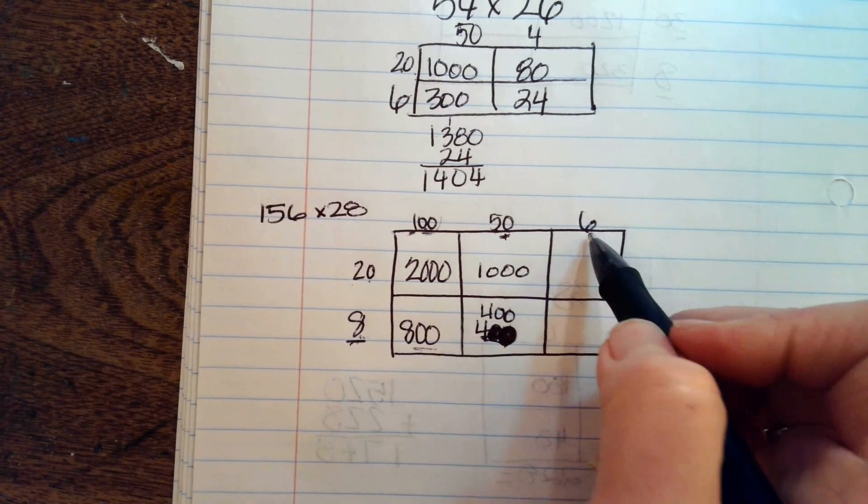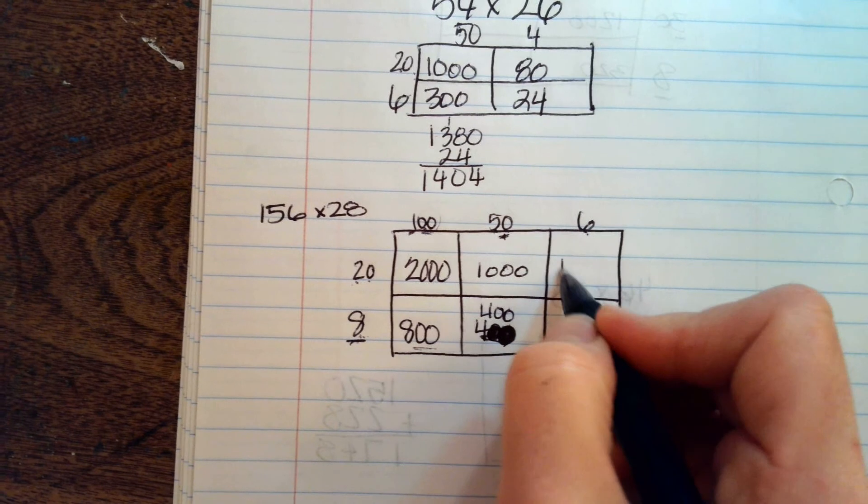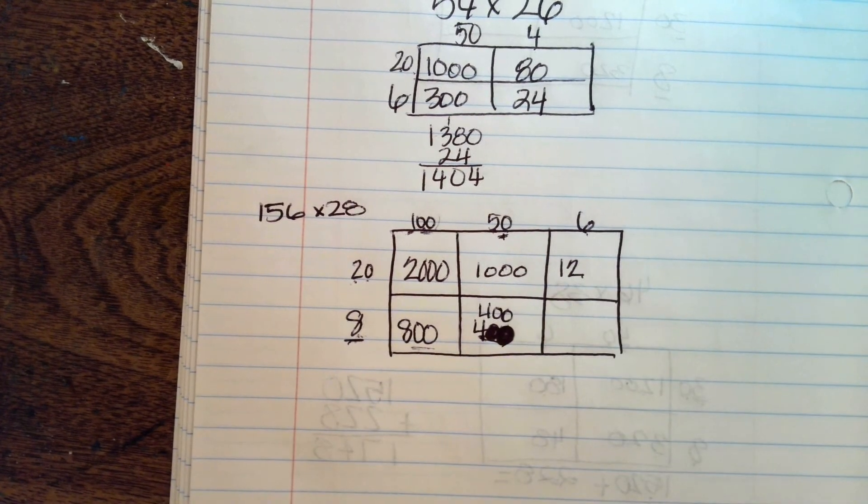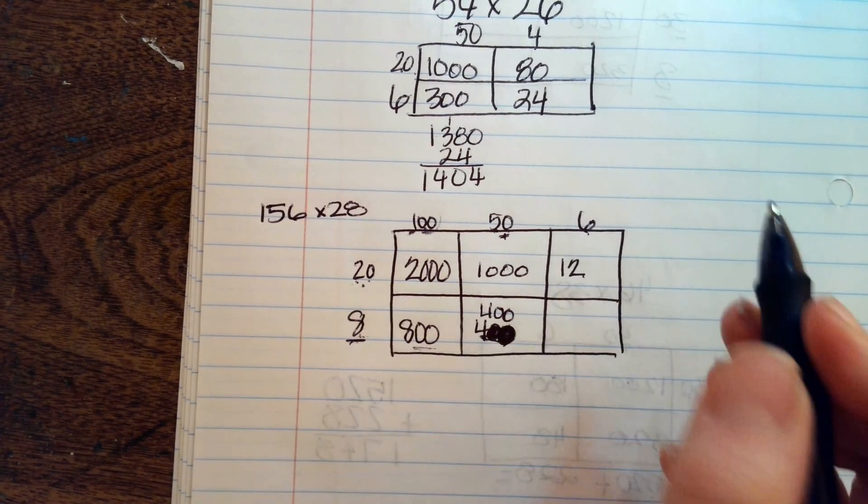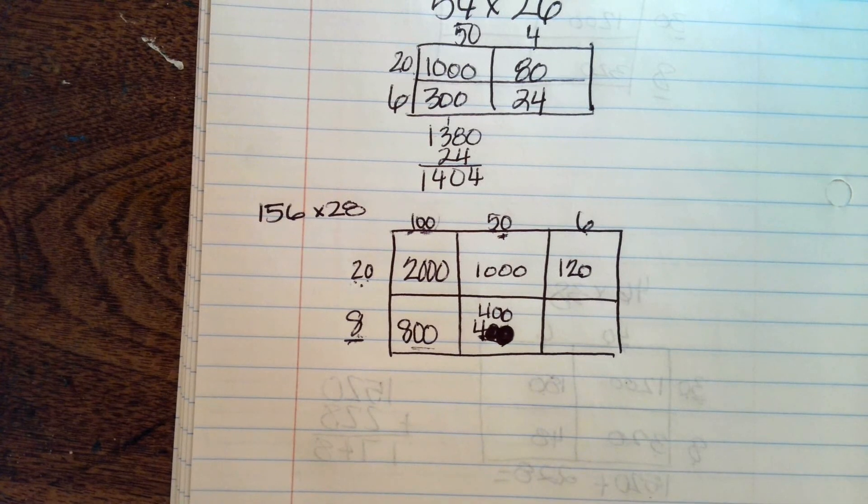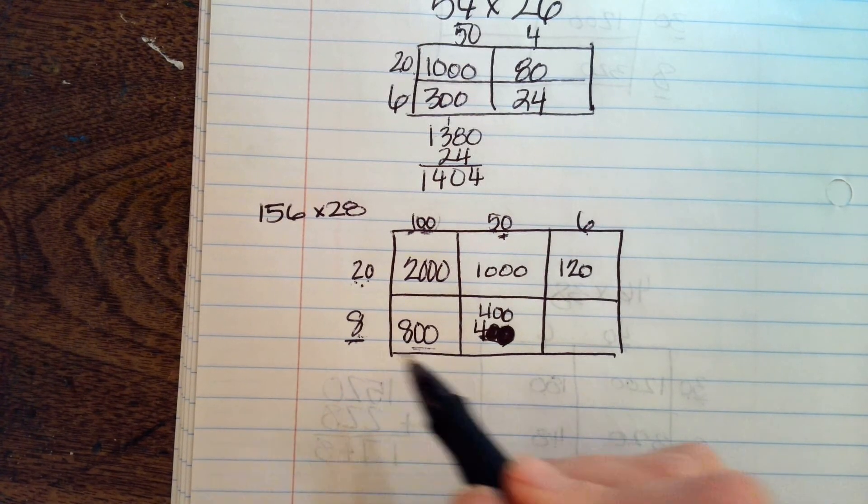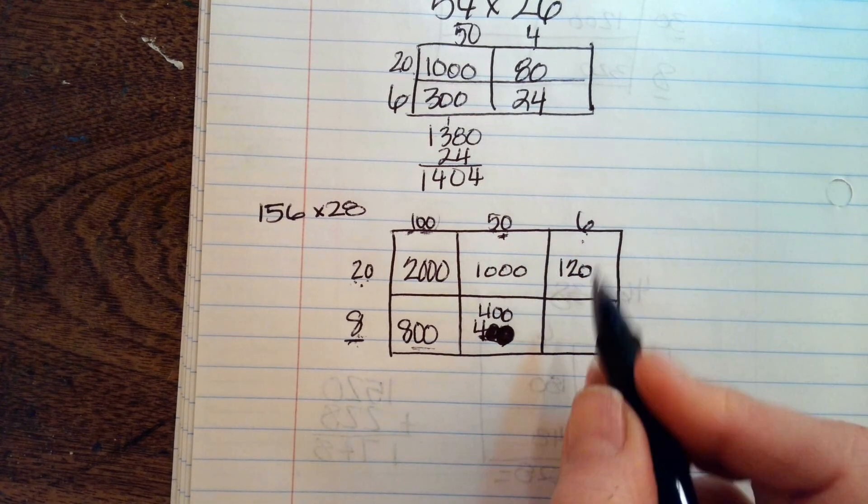All right. Next step. 6 times 2 is 12. And then this has a zero we have to put right here. And then 8 times 6 is 48.